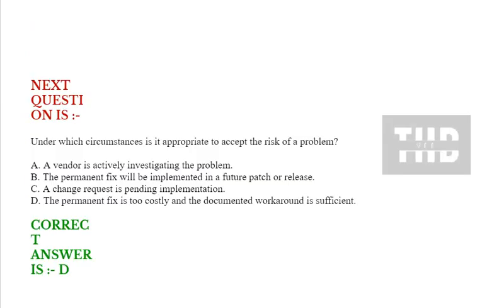Next question: Under which circumstances is it appropriate to accept the risk of a problem? Option A: A vendor is actively investigating the problem. Option B: The permanent fix will be implemented in a future patch or release. Option C: A change request is pending implementation. Option D: The permanent fix is too costly and the documented workaround is sufficient. Correct answer is Option D.